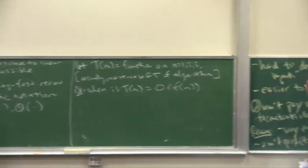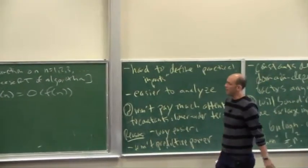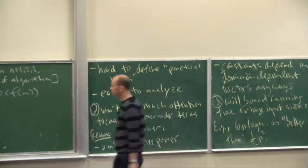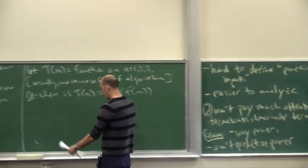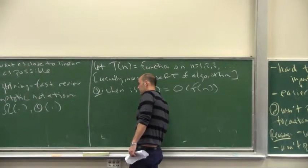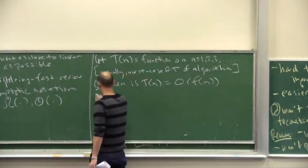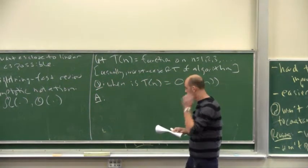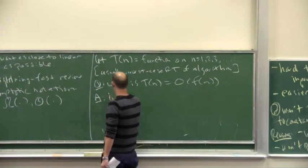So when is T(n) Big O of F(n)? T(n) here is something like that 6n log n plus 6n. Again, F(n) is going to be some relatively simple function like just n log n. We're going to give you the answer first in English, and then I'll give you a more precise version.